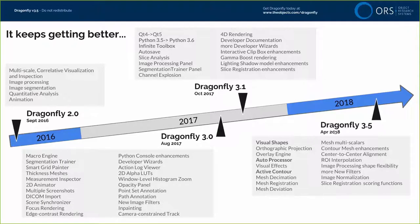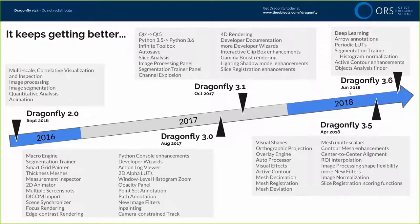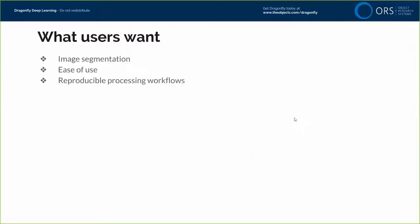Earlier this year, version 3.5 came out with a new feature called Visual Shapes, useful for image processing and rendering. We also introduced our auto-processor for automatic segmentation and more tools such as ActiveContour. Then more recently we introduced 3.6, which adds minor updates, but the biggest update is our deep learning. Our focus is on image segmentation — how pivotal that is to user productivity — along with ease of use and reproducible processing workflows.